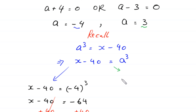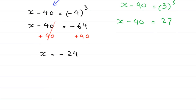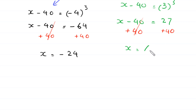When a equals 3, the equation becomes x minus 40 equals 3 cubed, which is 27. Adding 40 to both sides, this cancels and we get x equals 27 plus 40, which is 67. So we have two values of x: negative 24 and 67.